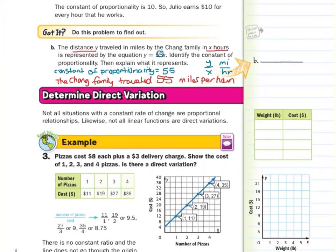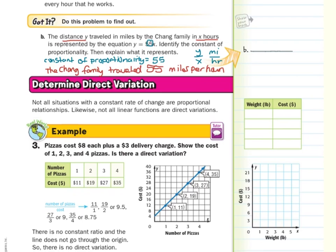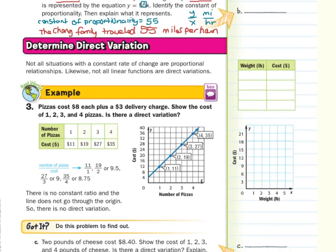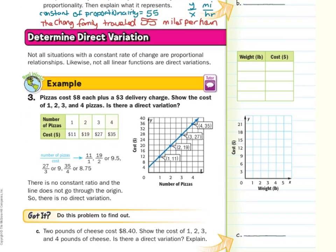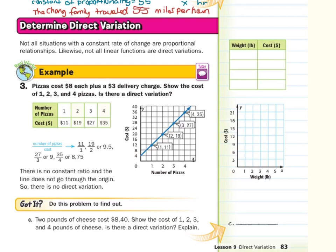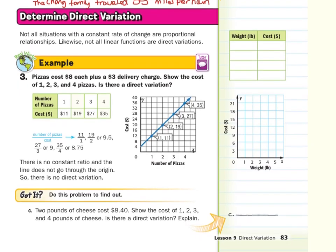Let's move on to determine direct variation. Not all situations with the constant rate of change are proportional relationships. Likewise, not all linear functions are direct variations. In guided example 3, pizzas cost $8 each plus a $3 delivery charge. Show the cost of 1, 2, 3, and 4 pizzas. Is there a direct variation?